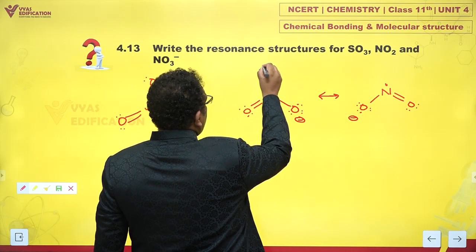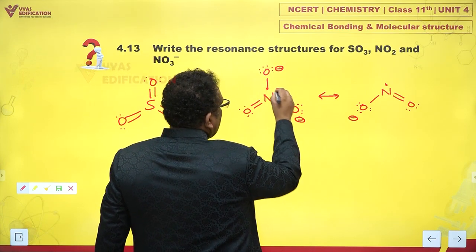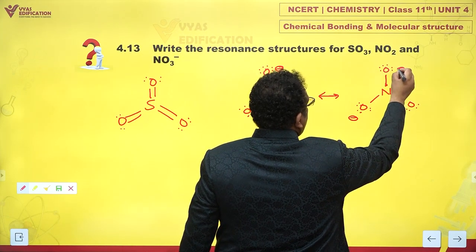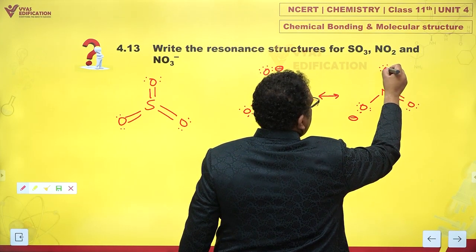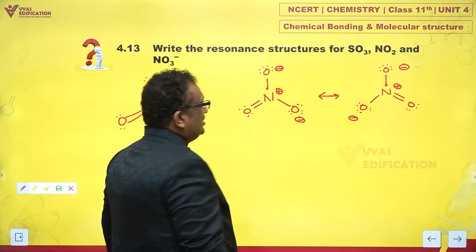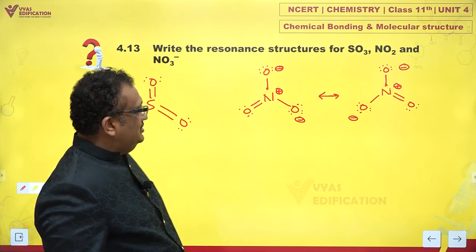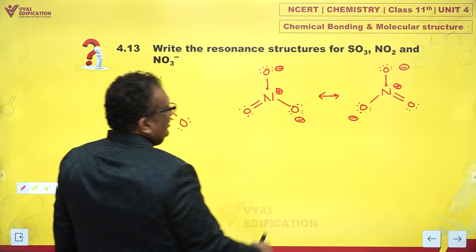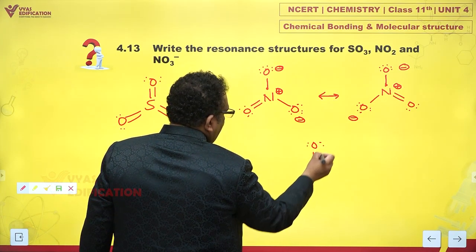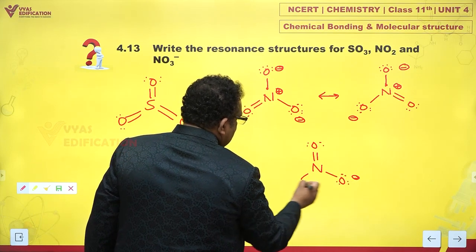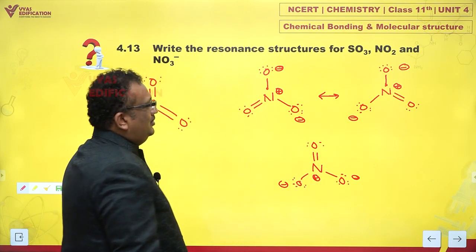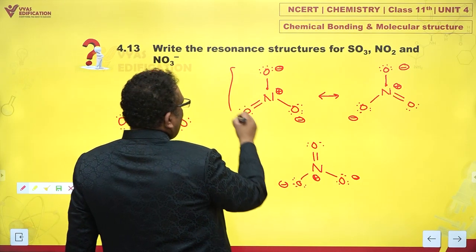NO3 minus. I am just putting formal charges there like this, and double bond can go here and here and here. And there is one more place on which double bond can go, and what is that? Just at the top like this. So these are the three contributing structures of NO3 minus.